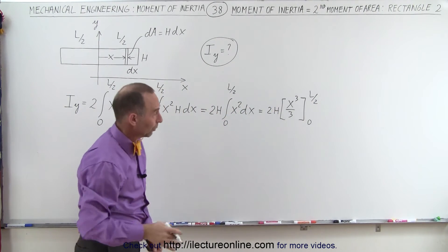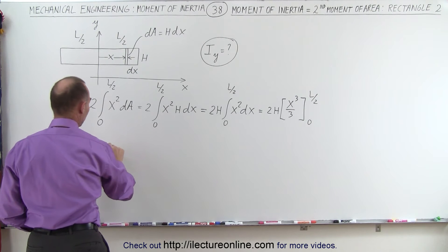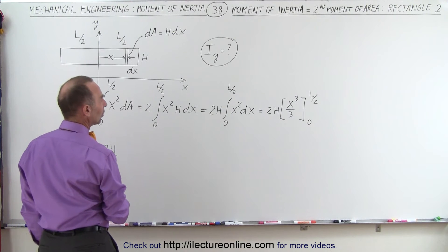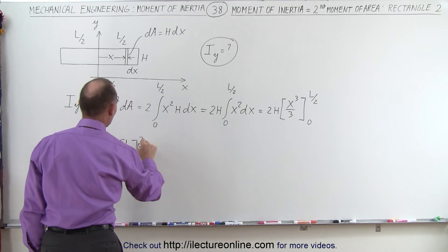Now when we plug in the lower limit, we get 0. When we plug in the upper limit, we get the following. This is 2h times, and I can take the 3 out here, 2 over 3h, times the quantity L over 2 to the third power,